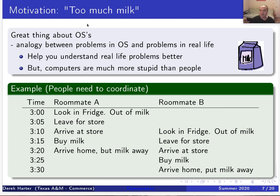To better understand concurrency we're going to work through the 'too much milk' example. There's an analogy that can be made between lots of things in an operating system and problems in real life. The goal is that this can help us understand concurrency. Computers are much more 'stupid' than people — concurrency issues that wouldn't be real problems for roommates would be problems if implemented as concurrent threads in a computing system.